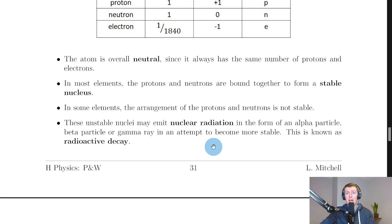This is what we mean by the term radioactive decay—it's an unstable nucleus trying to become more stable, and it can do so by emitting an alpha particle, beta particle, or gamma ray. Remember that alpha and beta are both particles, whereas gamma rays are waves.